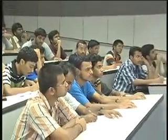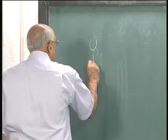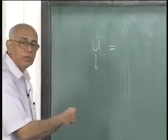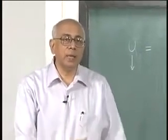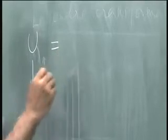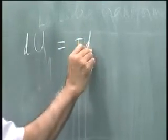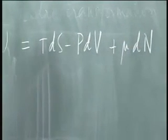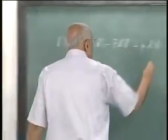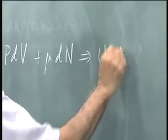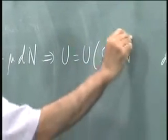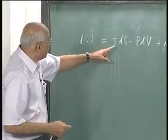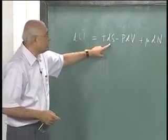You start with the internal energy u. What is du a function of? du = T·dS − p·dV for a fixed number of particles, so u is a function of S and V. More generally, the first law of thermodynamics gives du = T·dS − p·dV + μ·dN, which implies u is a function of S, V, and N. From this it is obvious that T = ∂u/∂S keeping V and N constant — these are the partial derivatives.